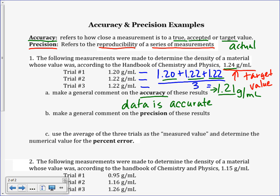Make a general comment about the precision of the results. Now for precision, we don't care about this actual value over here. What we need to look at is our data set. Looking at our three numbers, are those three numbers close together? Are they pretty much the same measurement repeating over and over again? Yes, so the data here is going to be either precise or not precise. The data is precise.